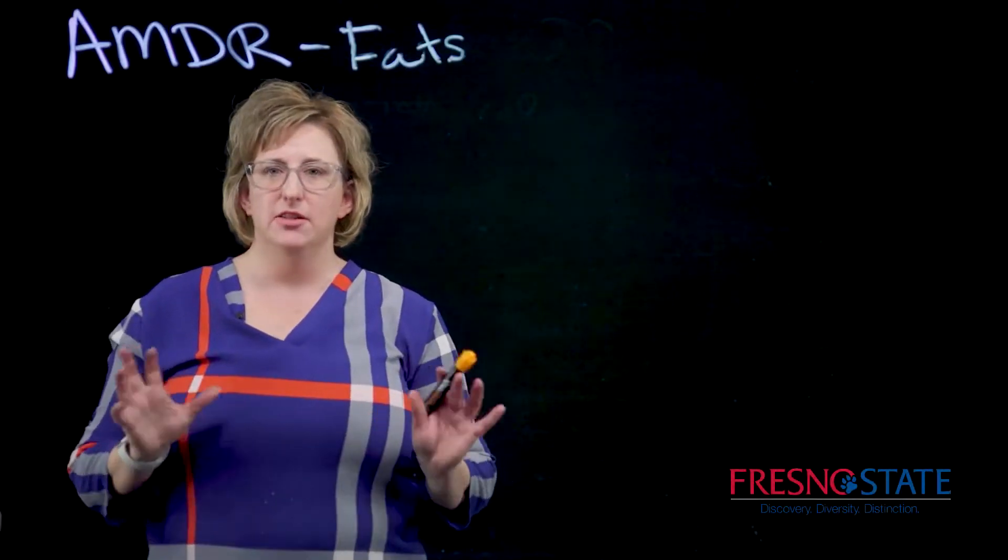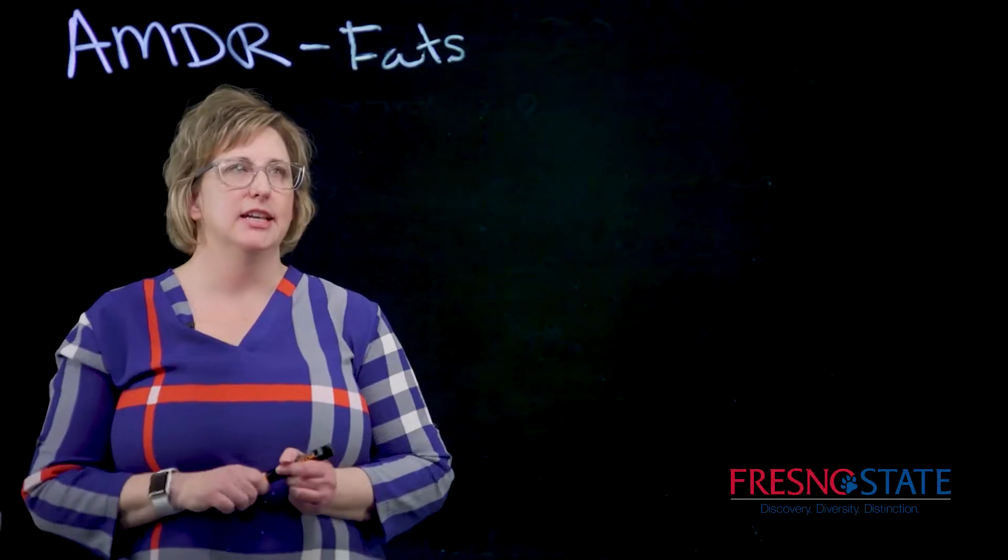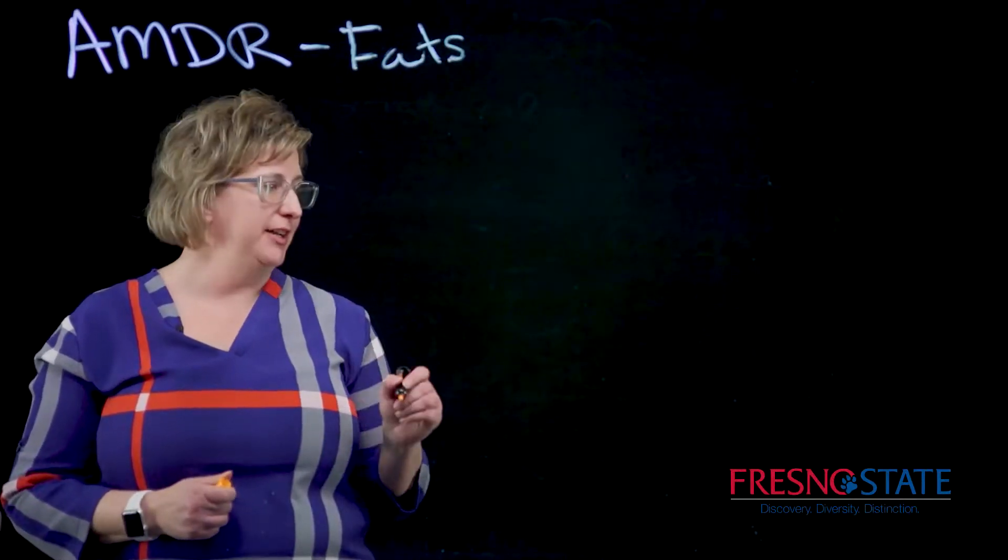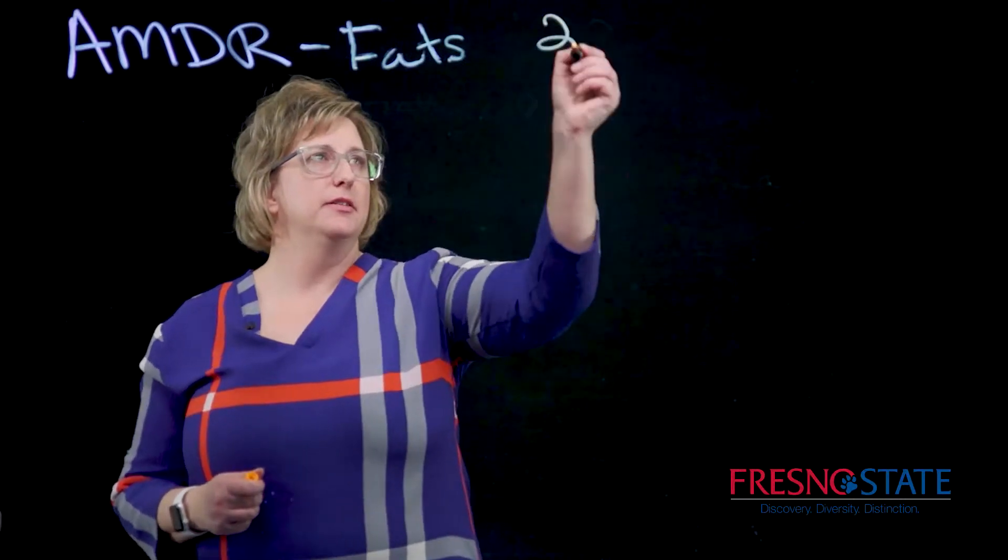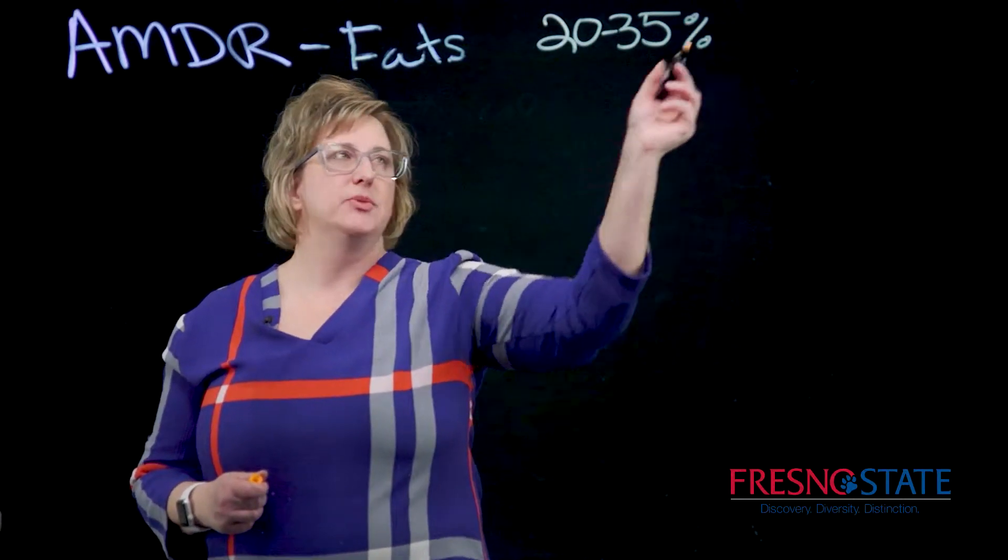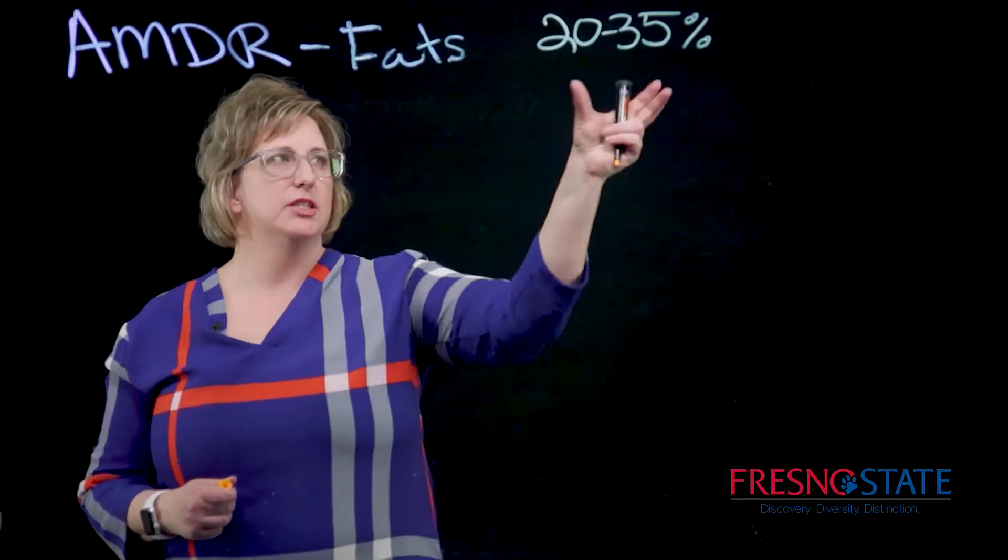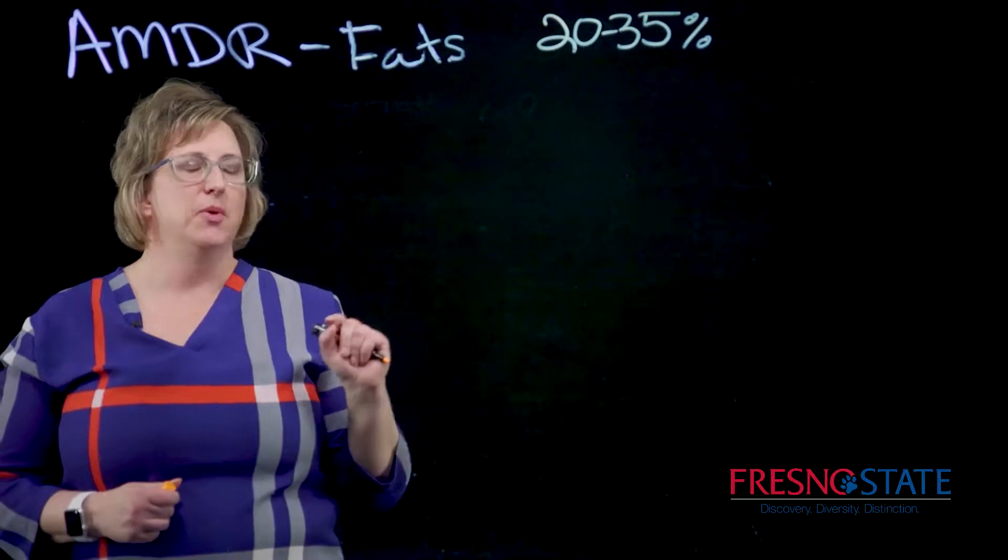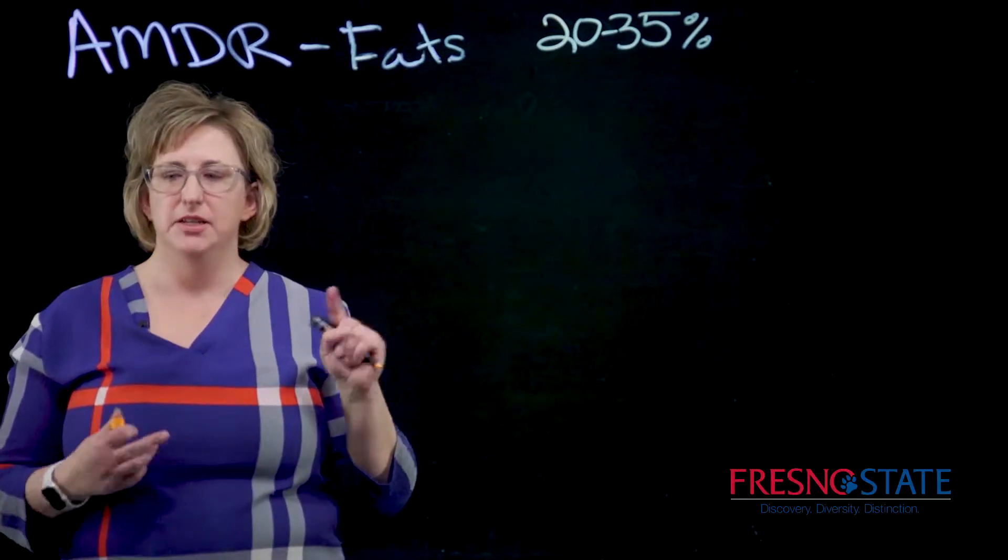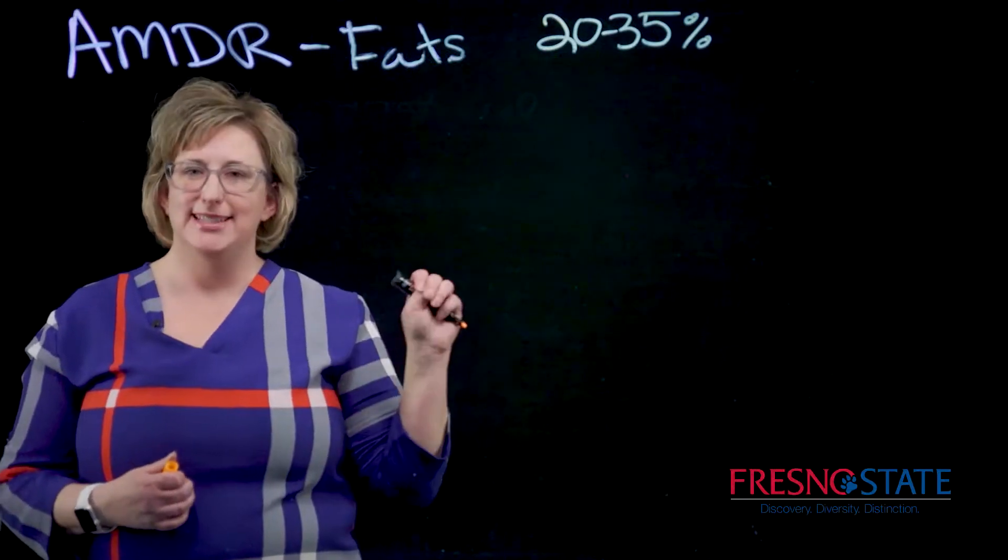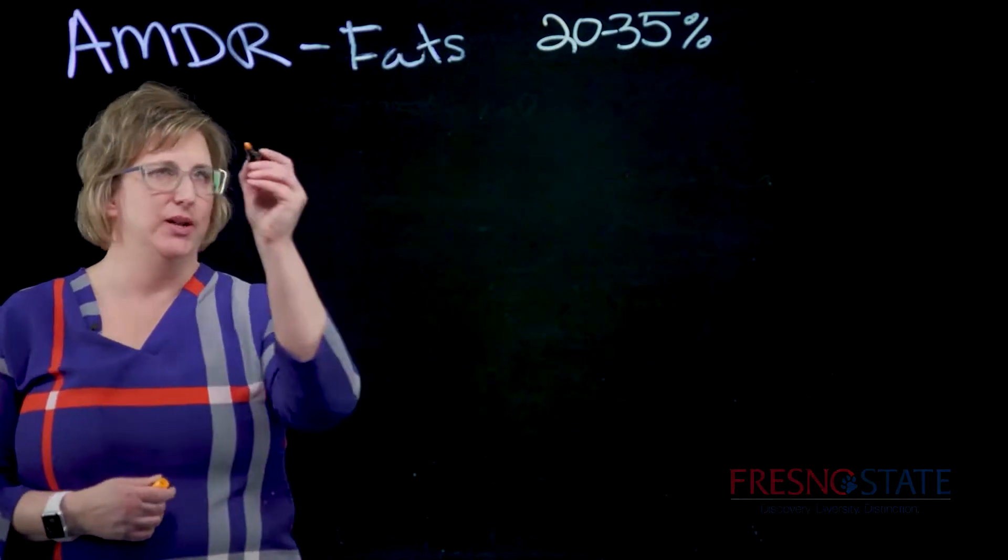So now let's look at our last macronutrient, fat. Do you remember what the acceptable macronutrient distribution range for fat is? Think hard. 20 to 35%. This one's very similar to protein, just a tighter range. How many kcals per gram are there in fat? For carbohydrate and protein it's four, and it's nine for fat.